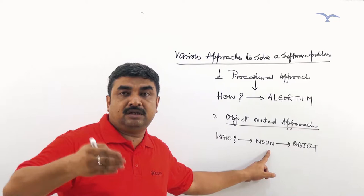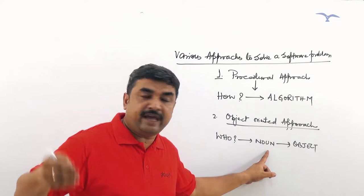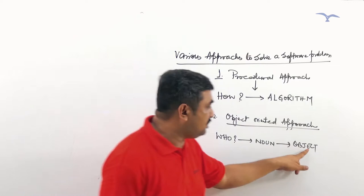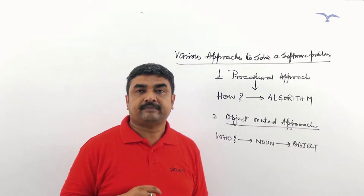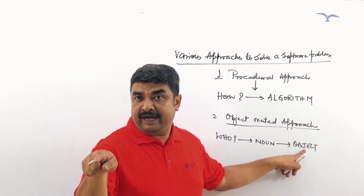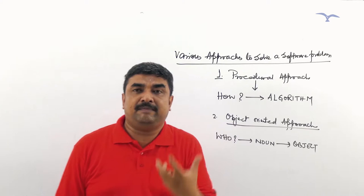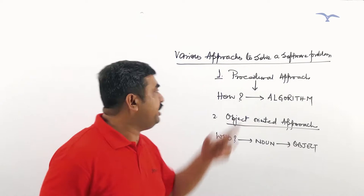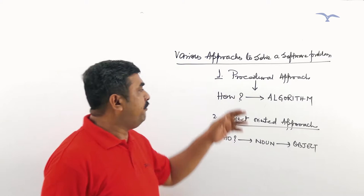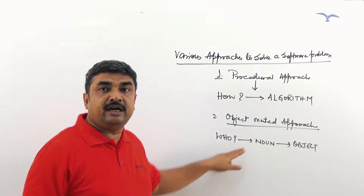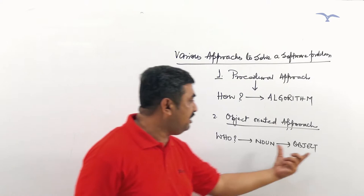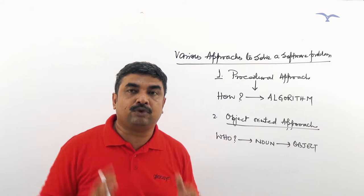When I identified the maid as an answer to this 'who', the maid is nothing but a noun. Any noun exists in this real world because the definition of noun is it's a name of a person, place, animal or thing. So any noun exists in this real world, and anything which exists in this real world is nothing but an object. So in the second approach, I identified the maid, who was the real object that wrote the entire algorithm on my behalf. So if we try to differentiate between these two approaches: in the first approach, the software developer focuses on writing the algorithm, and in the second approach, which is the object-oriented approach, the software developer focuses on identifying the relevant objects to solve the problem.